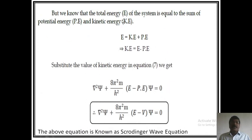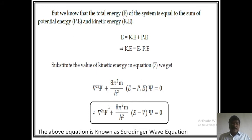We know that the total energy of the system equals the sum of potential energy and kinetic energy: E = KE + PE, which implies KE = E − PE. Substituting the value of kinetic energy in equation 7, we get: ∇²ψ + (8π²m/h²)(E − PE)ψ = 0. Therefore, ∇²ψ + (8π²m/h²)(E − V)ψ = 0. The above equation is known as the Schrödinger wave equation.